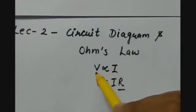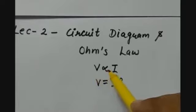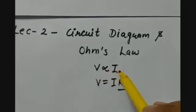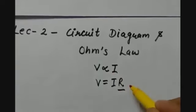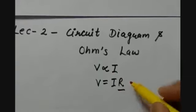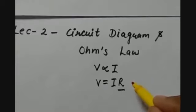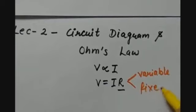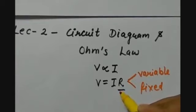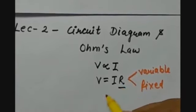According to Ohm's law, the potential difference across the ends of the conductor is directly proportional to the current flowing in the circuit. When we remove the proportionality constant, we get a constant which is called resistance. This resistance is the property of a material because of which a material offers resistance, or it opposes the flow of charge. It can be variable or it can be fixed. Depending upon the amount of resistance offered by the material, we have seen varieties of materials like good conductors and bad conductors.